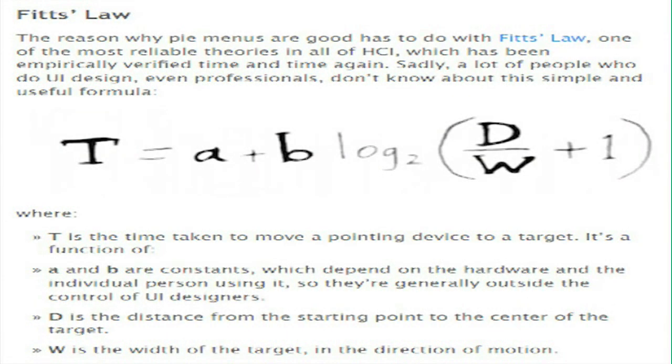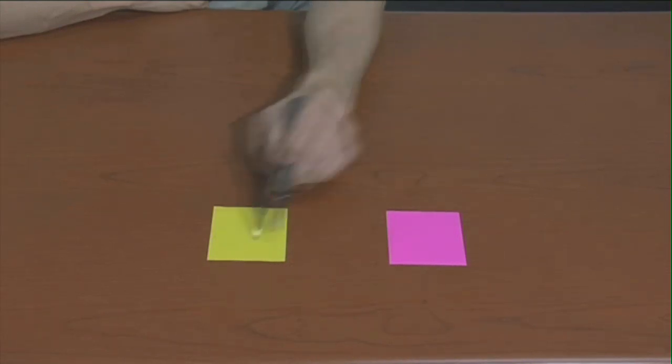Fitts' Law is one of the few laws that have been identified that applies to human behavior. It's labeled a law because the formula can be used to predict human behavior under a large number of situations.